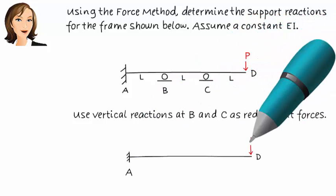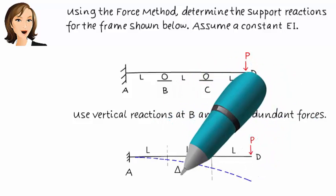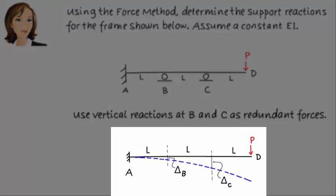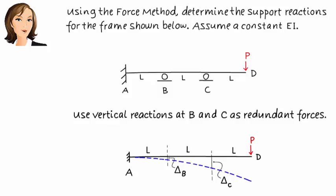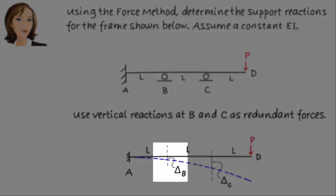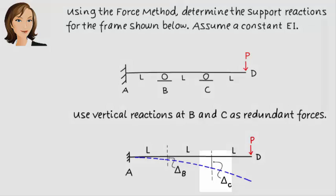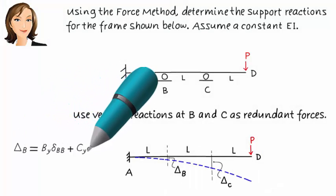After removing the redundant forces, the beam is going to deform like this. We refer to the vertical displacement at B as delta B and call the vertical displacement at C delta C. Then we can write the compatibility equations this way.